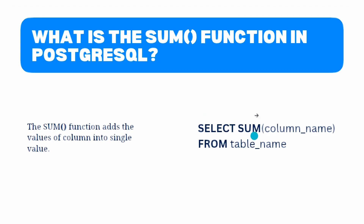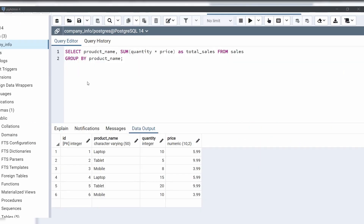After SELECT we specify the SUM function, and within the SUM function we specify the column name — which is the name of the column for which we want to calculate the sum. The table name is the name of the table that contains the column.